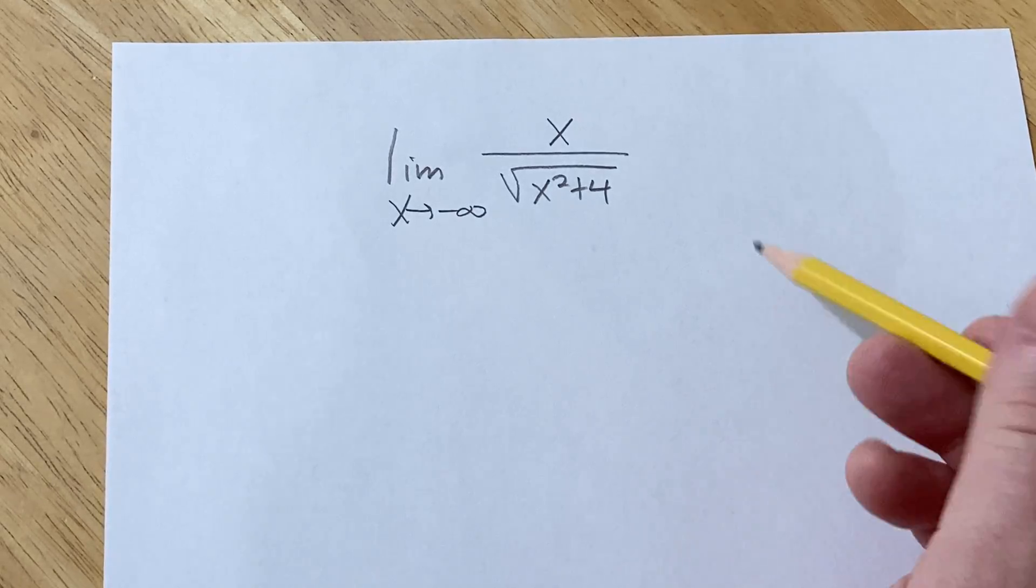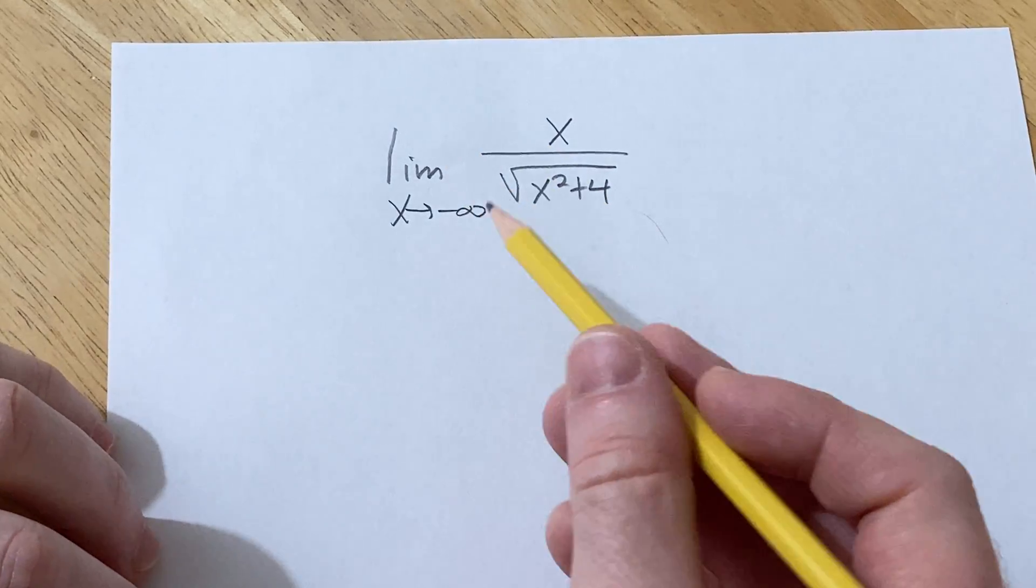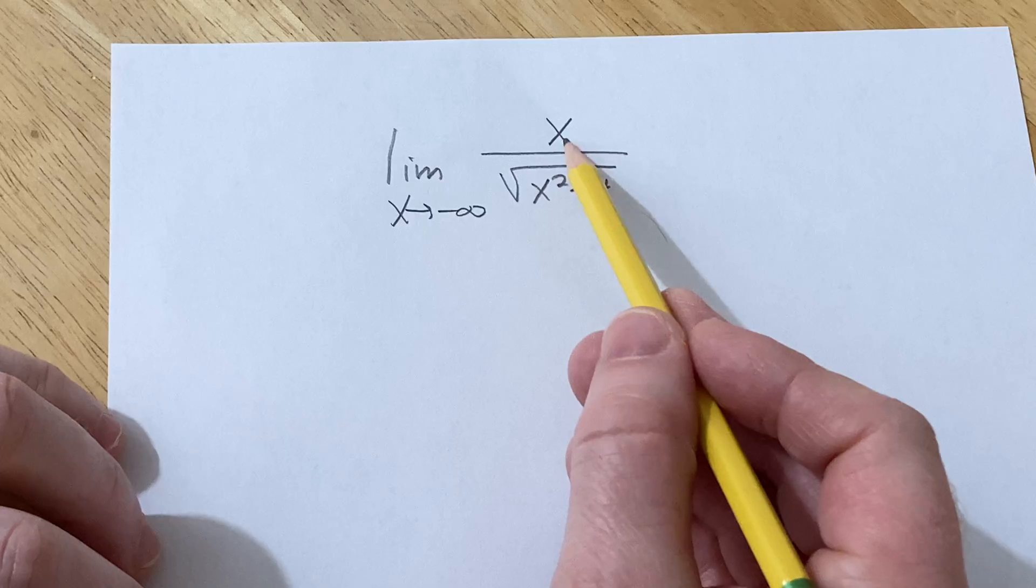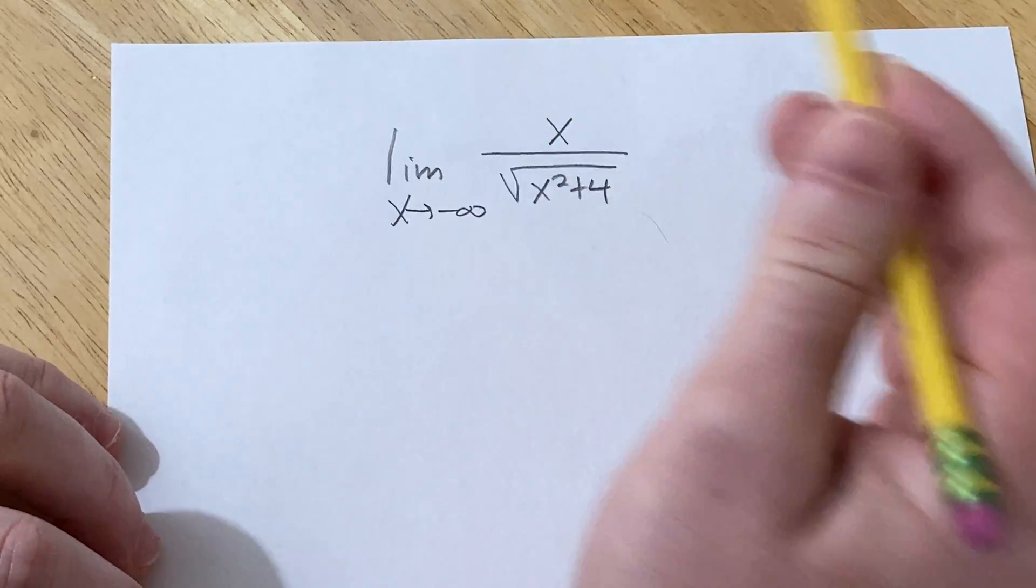Hello, in this problem we are going to find the limit as x approaches negative infinity of x over the square root of x squared plus 4.